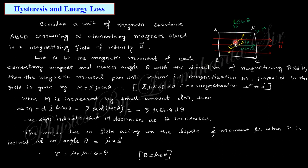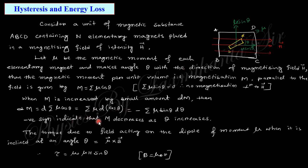To understand energy loss due to hysteresis, consider a material containing dipole moments mu with n elements. When you apply a magnetic field there is a component of the moment along the field — mu cos theta — and perpendicular to the field — mu sin theta. The perpendicular components cancel out, leaving only the mu cos theta component contributing to the net magnetization.